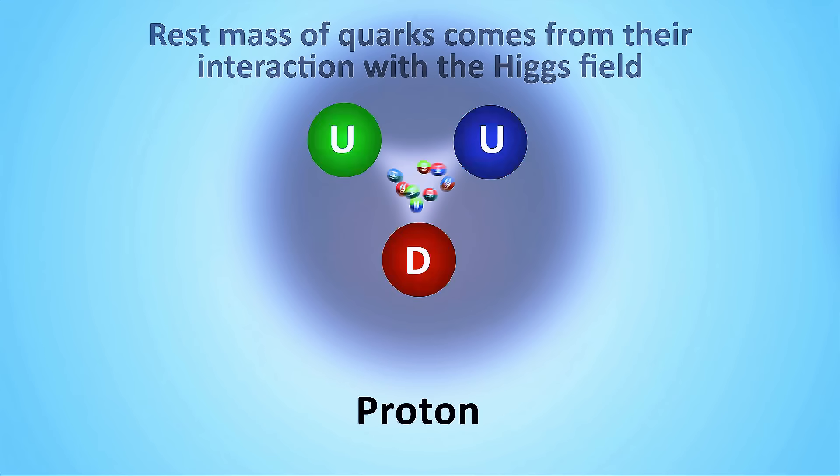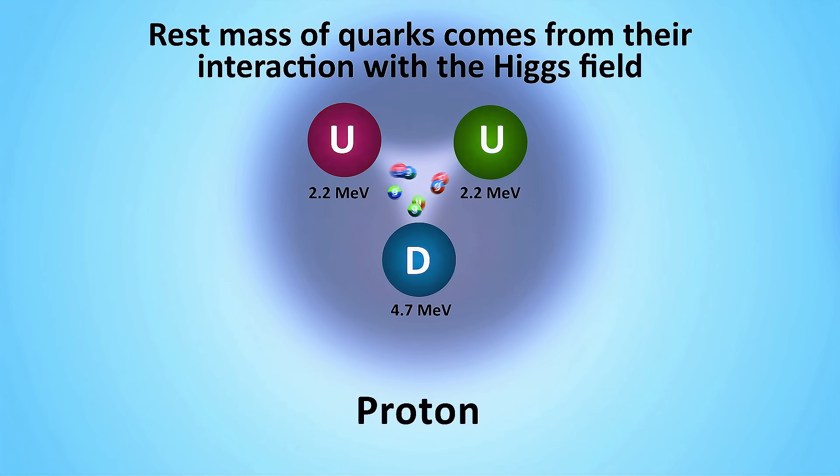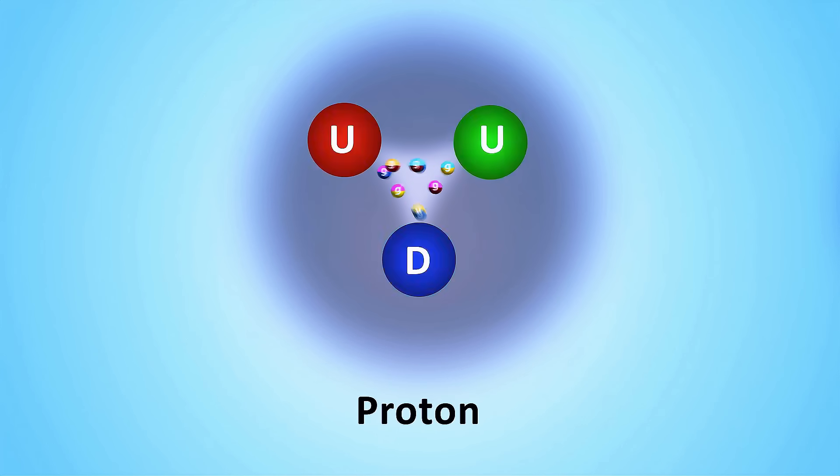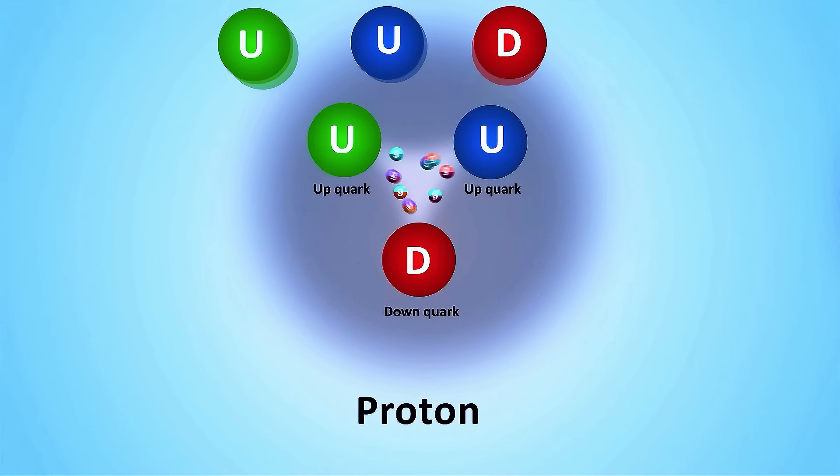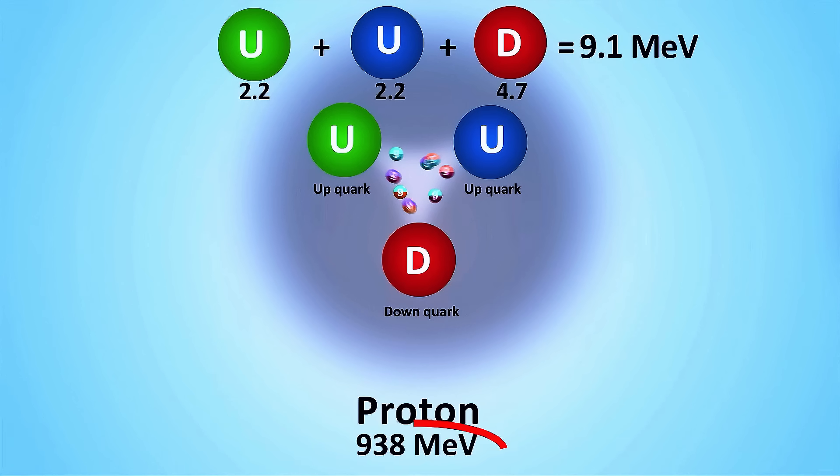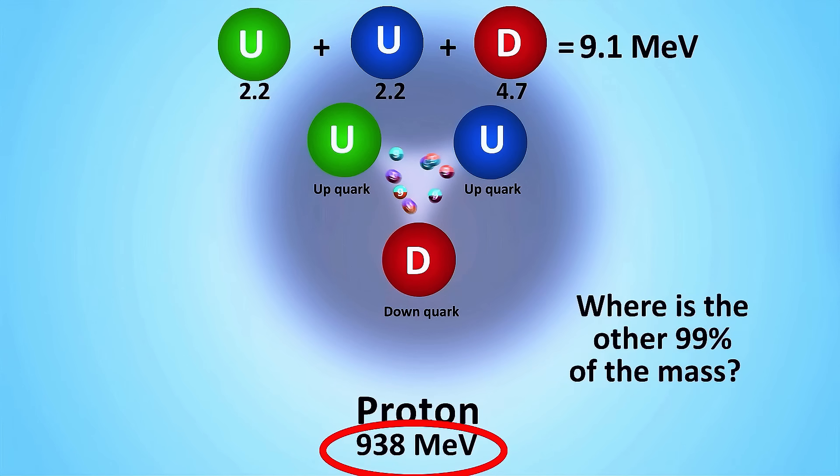Note that at the fundamental level, the masses of elementary particles within the atoms, that is the quarks and electrons, comes from their interactions with the Higgs field. But you may be surprised to learn that only about 1% of an atom's mass comes from adding up the masses of its fundamental components. So where does the remaining 99% come from?